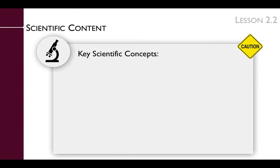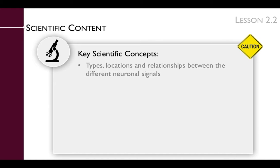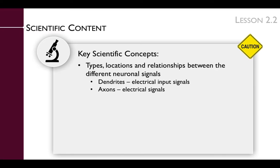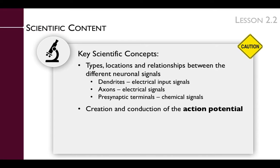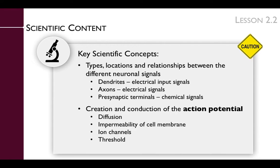To prepare for this session, you'll need to review the key scientific concepts that will be presented throughout it. Students find the scientific concepts in this lesson to be challenging, so it is imperative that you take additional time to ensure you understand these concepts. Those concepts include the types, locations, and relationships between different neuronal signals — that dendrites generate electrical input signals, axons generate electrical signals, and presynaptic terminals generate chemical signals. We'll also cover the creation and conduction of the action potential, involving diffusion, impermeability of the cell membrane, ion channels, and thresholds.